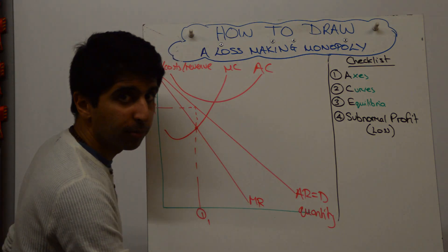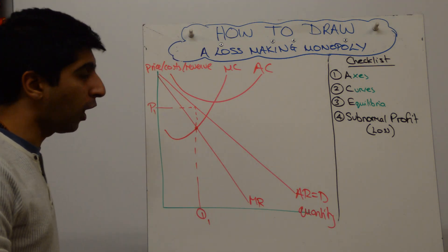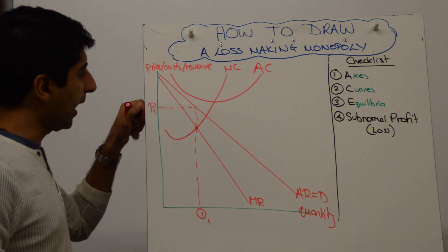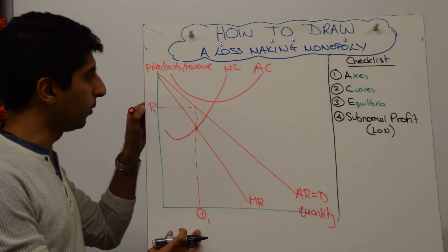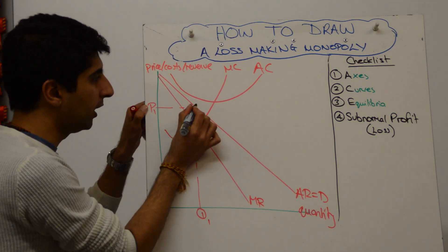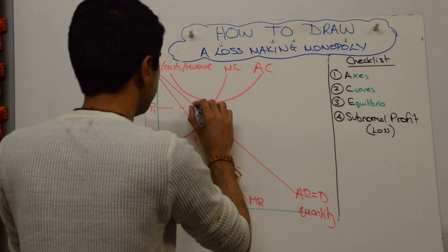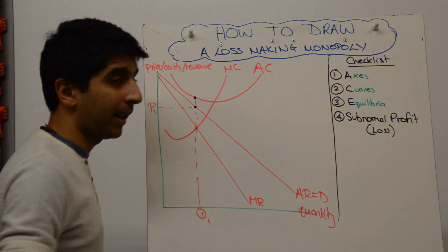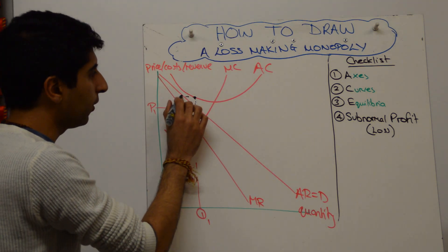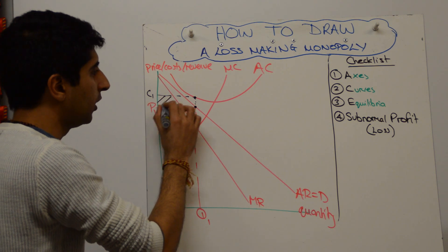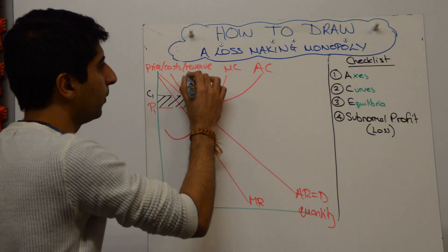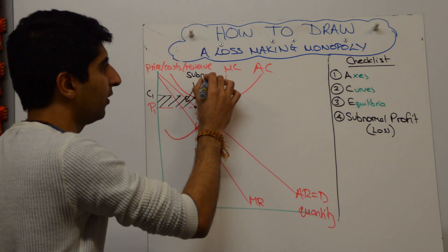Now we need to work out the level of profit. We know we want to show a loss. Are we doing that here? Well, average revenue at quantity Q1 is at P1 here, so this black dot. If we keep going up, average cost is the higher black dot. Take that point across, call it C1, shade in the little box left, we can label that subnormal profit, which is our loss.